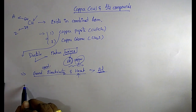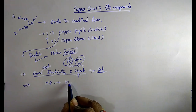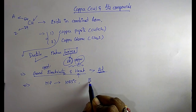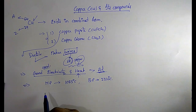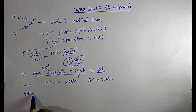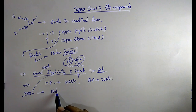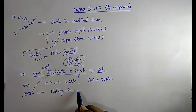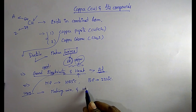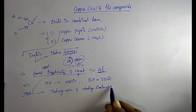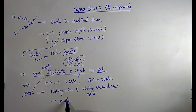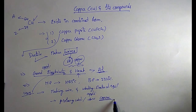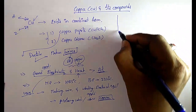The melting point of copper is 1083 degrees centigrade and the boiling point is 2310 degrees centigrade. Since copper is a good conductor of electricity, it is used for making wires and windings of electrical equipment and appliances, including all motor windings.